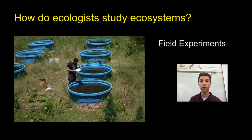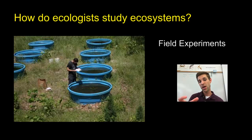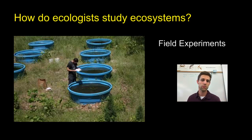Ecologists can also work with field experiments. Often these experiments are going on out in the field or in the natural environment, but they can also take place in a lab or greenhouse. This individual appears to be mimicking a pond-like ecosystem, with replications of that pond outdoors, exposed to non-living factors like sunlight and rainfall that it would naturally encounter. He probably has questions like how certain organisms survive in this environment, or how they interact. So ecologists can also do field experiments.